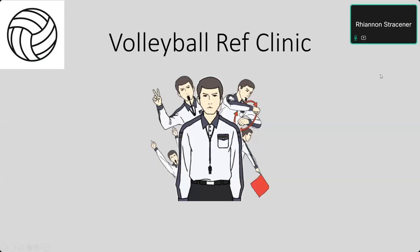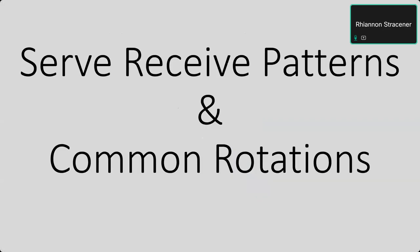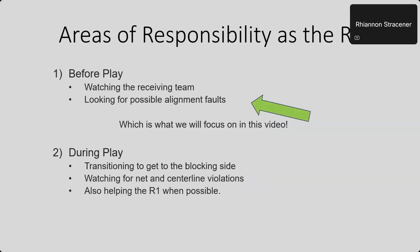In this video, we will discuss common serve receive patterns and what we should be looking for as the R2. Some areas of responsibility as the R2 are before play: you should be watching the receiving team and looking for possible alignment faults. The other responsibilities during play are transitioning from side to side to get to the blocking side, watching for net and centerline violations, and helping out the R1 whenever possible.